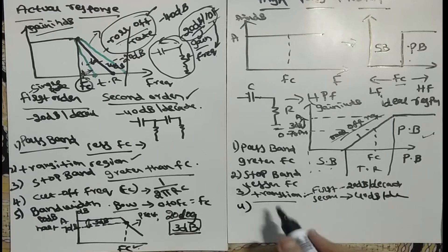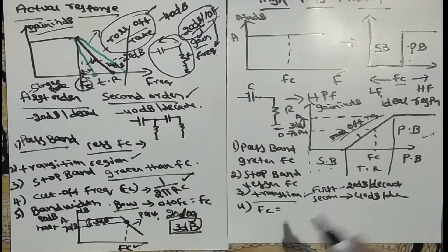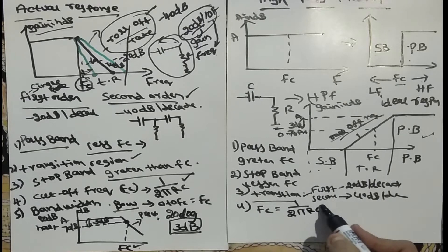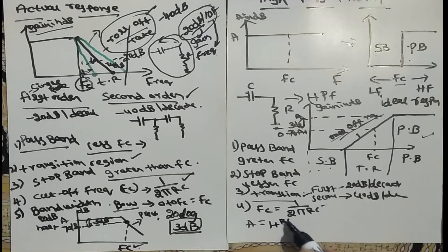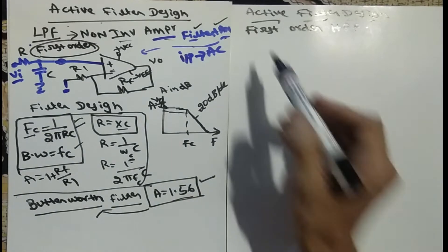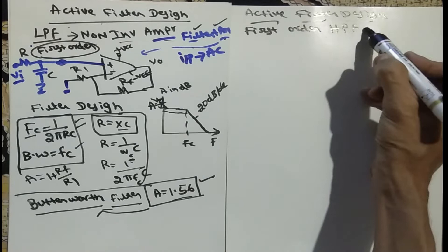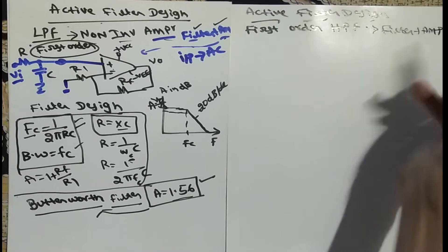The cutoff frequency equation for the high pass filter is the same as for the low pass filter: fc = 1 divided by 2π RC — nothing changes. The gain formula also remains the same, using a non-inverting amplifier: gain = 1 plus Rf divided by R1.